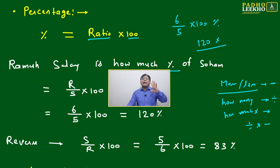Then Ramesh salary is how much percentage of Soham? R by S into 100. R by S will be 6 by 5 into 100, it will become 120 percent.